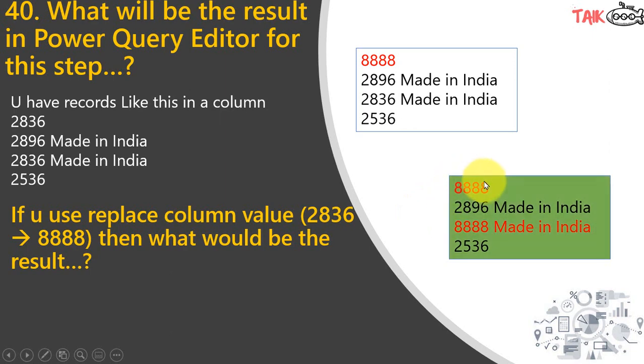The correct answer is it will replace wherever the value is available — so every instance of 2836 will be replaced with 48.